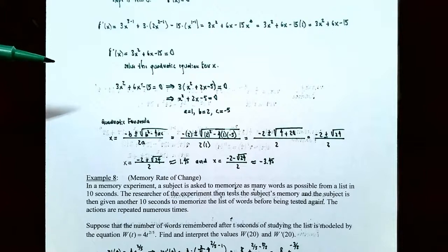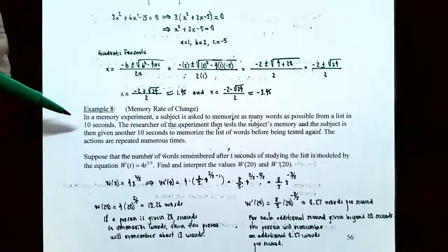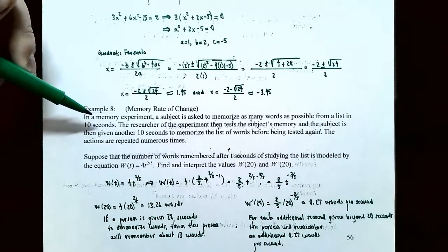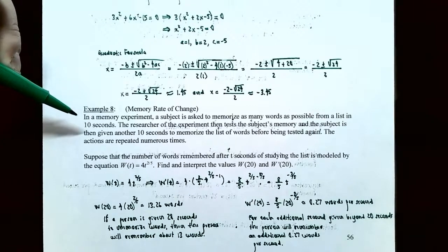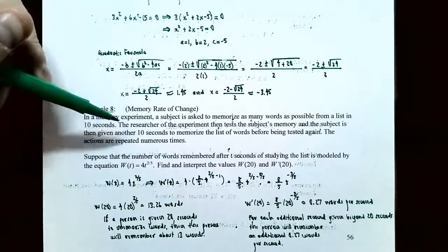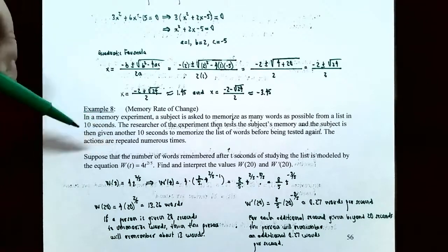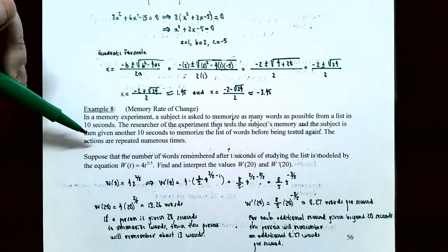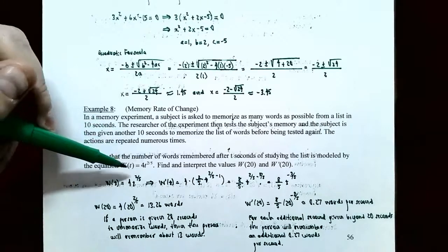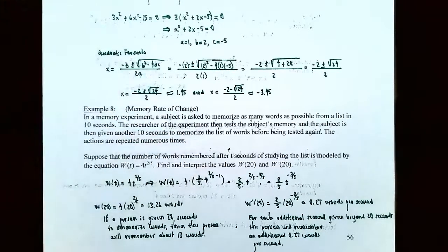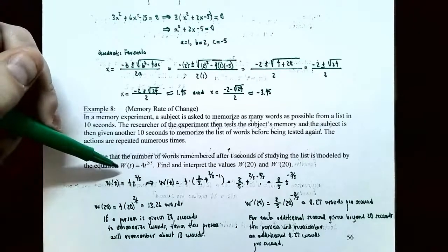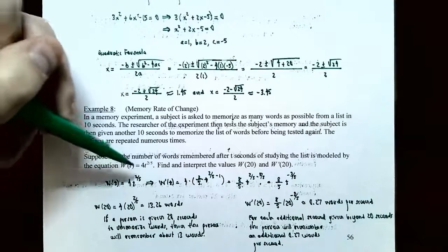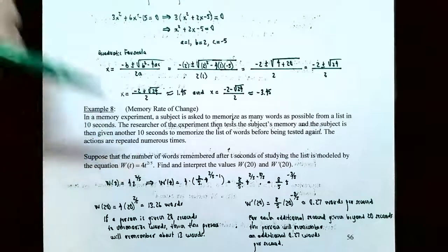Those last two problems showed how to use the derivative in applications involving the slope of the tangent line. Now let's look at another type of application. Example 8: memory rate of change. In a memory experiment, a subject memorizes words from a list in 10-second intervals. The number of words remembered after t seconds is modeled by w of t equals 4 times t to the 2/5 power.